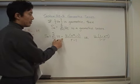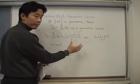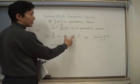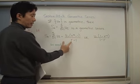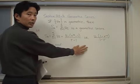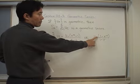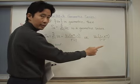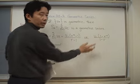This is going to be equal to u sub 1 times the quantity r to the n minus 1 divided by r minus 1, or it is going to be equal to u sub 1 times 1 minus r to the n divided by 1 minus r.